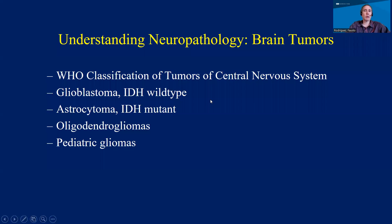This is an outline of what I'm going to be discussing today. I'm going to be focusing a lot on the WHO classification of brain tumors, which is a standard of classification that is always updated through the years and gives us a terminology to discuss the different types of tumors we can encounter in the CNS. We're also going to be discussing some of the pathologic features of the major brain tumors, particularly gliomas.